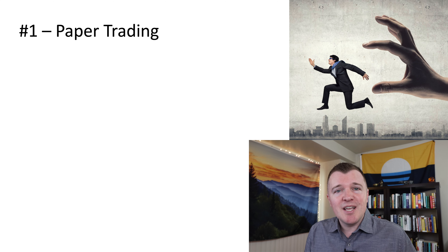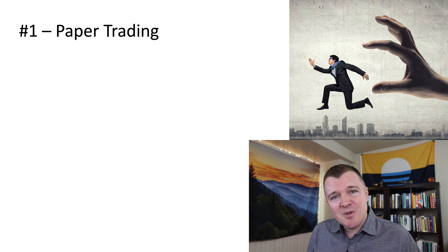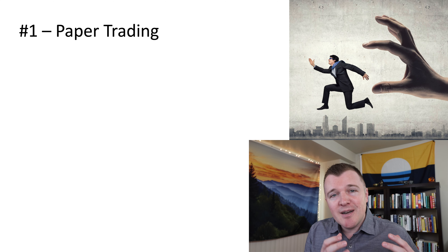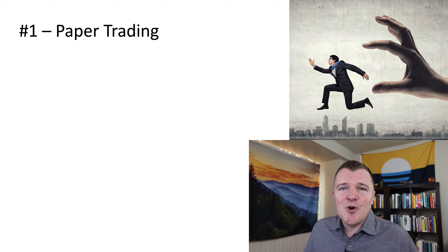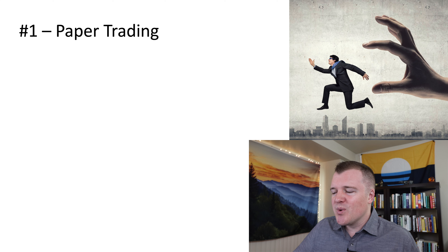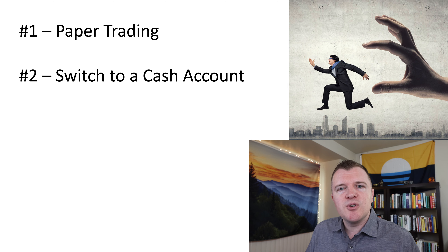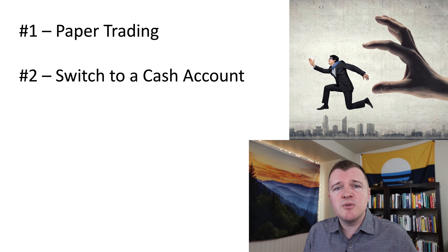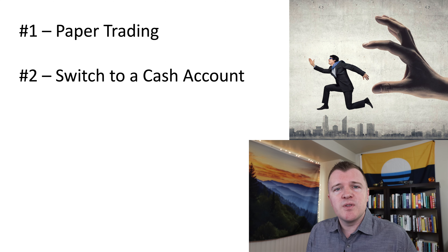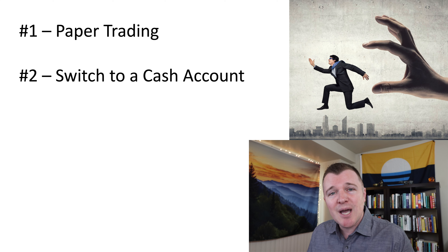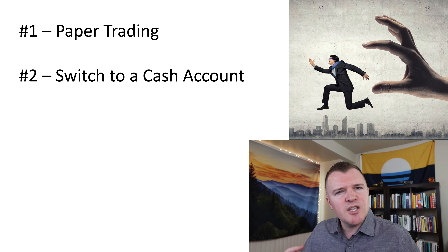So how do you get around the PDT rule? There are some things you can do. The first option is paper trading. There are great brokerage companies like TD Ameritrade that allow you to do paper trading, so you can practice buying and selling and day trading as much as you want with a paper account while you're building up your capital to get above the PDT rule. I know people aren't happy with this — they want to do it for real — but this is an option available to you.